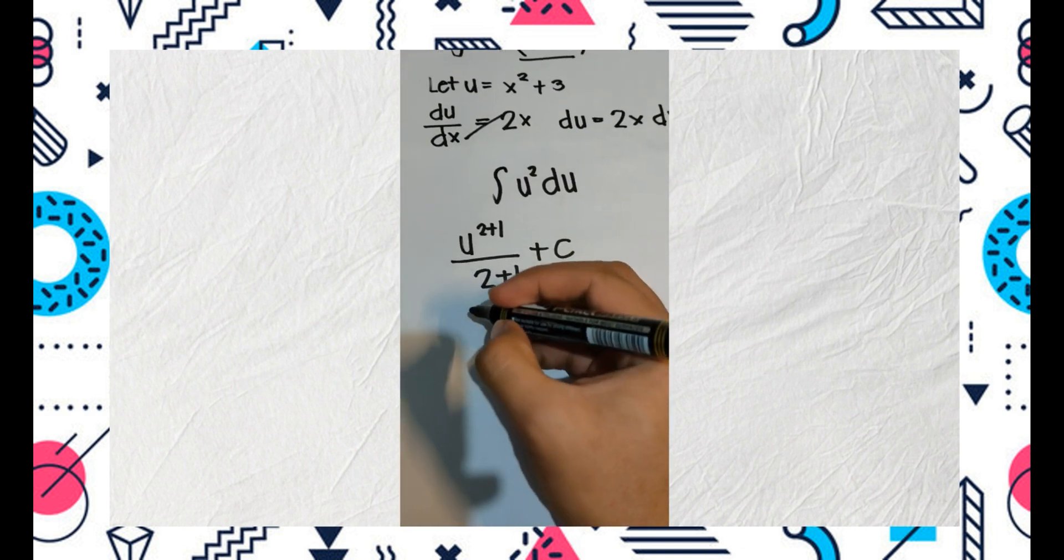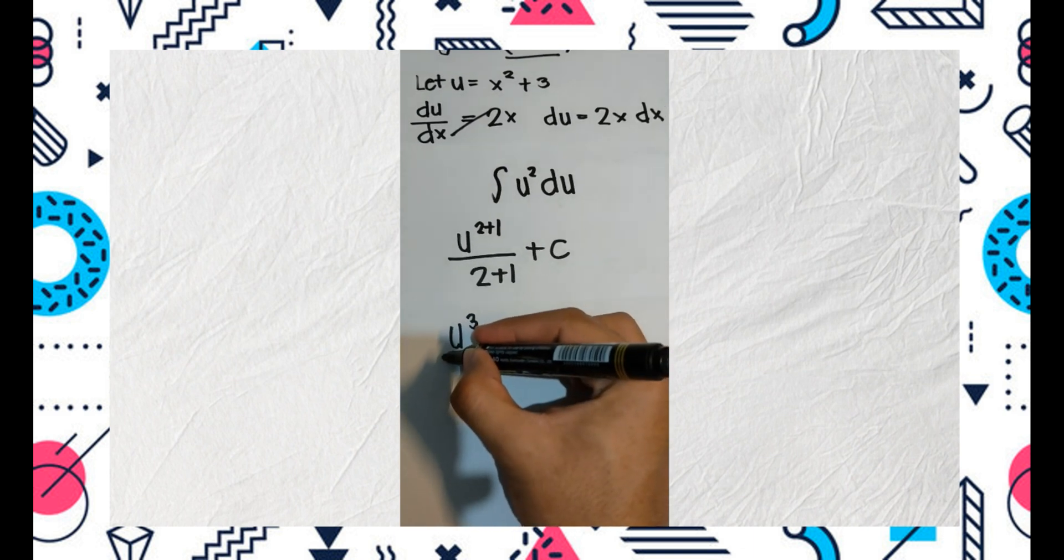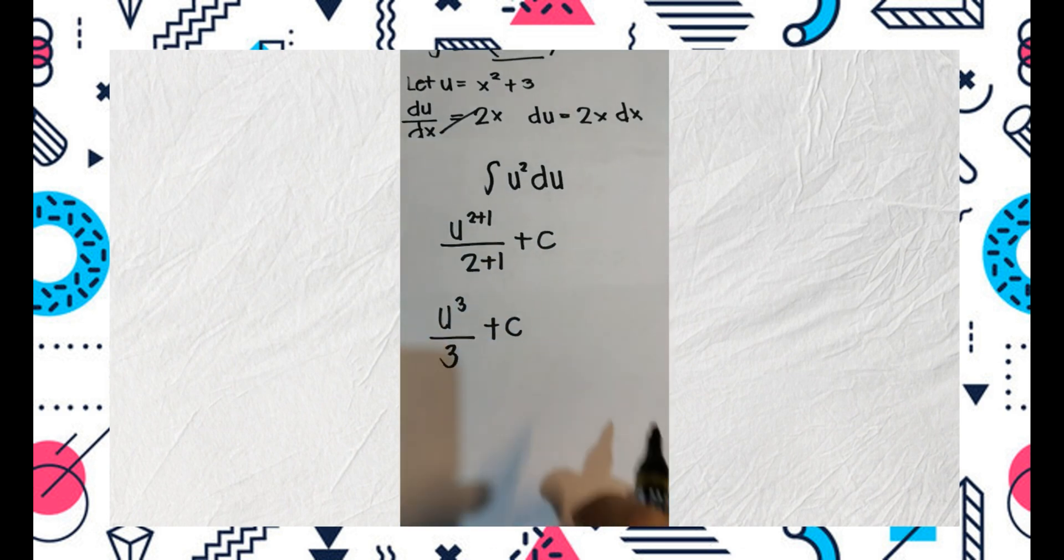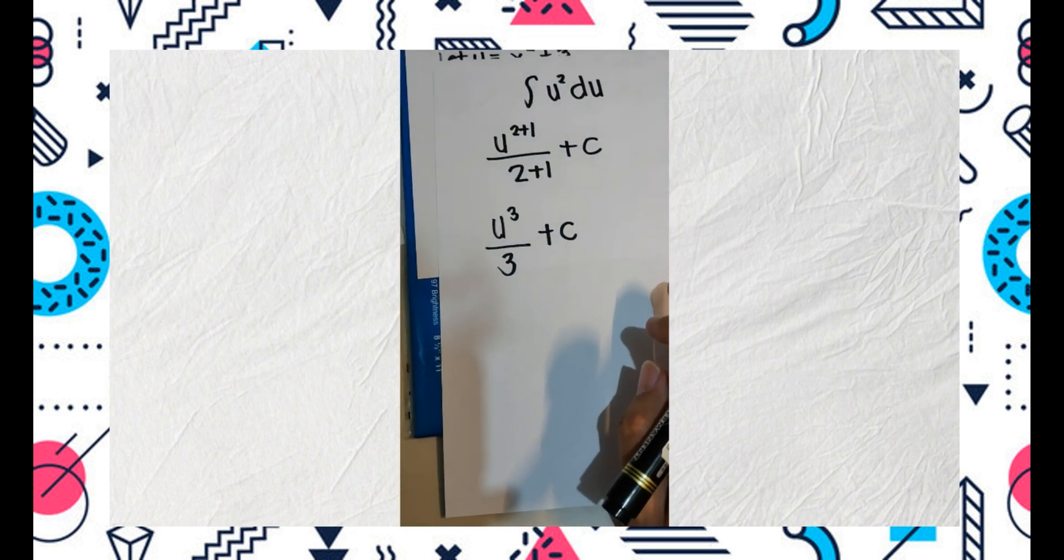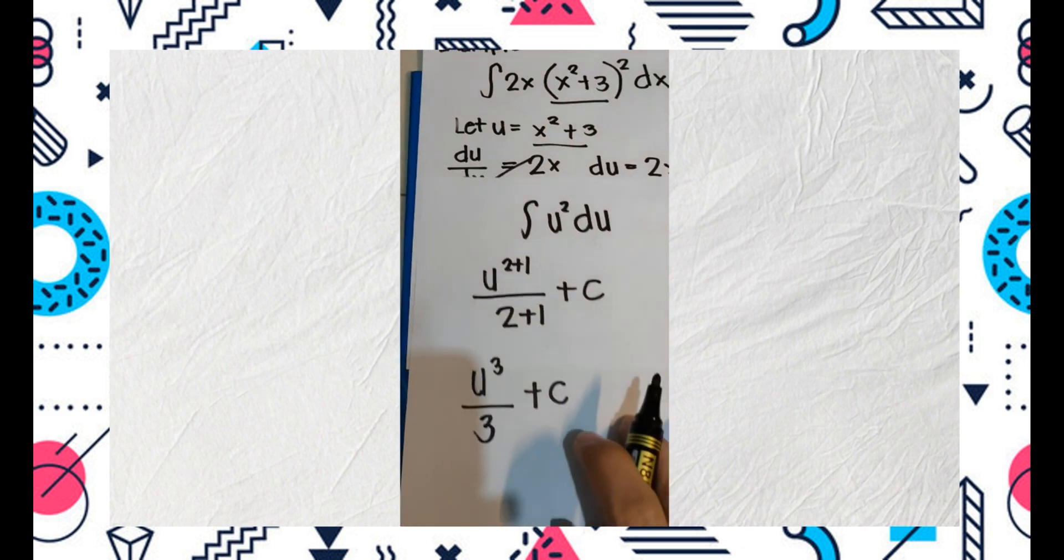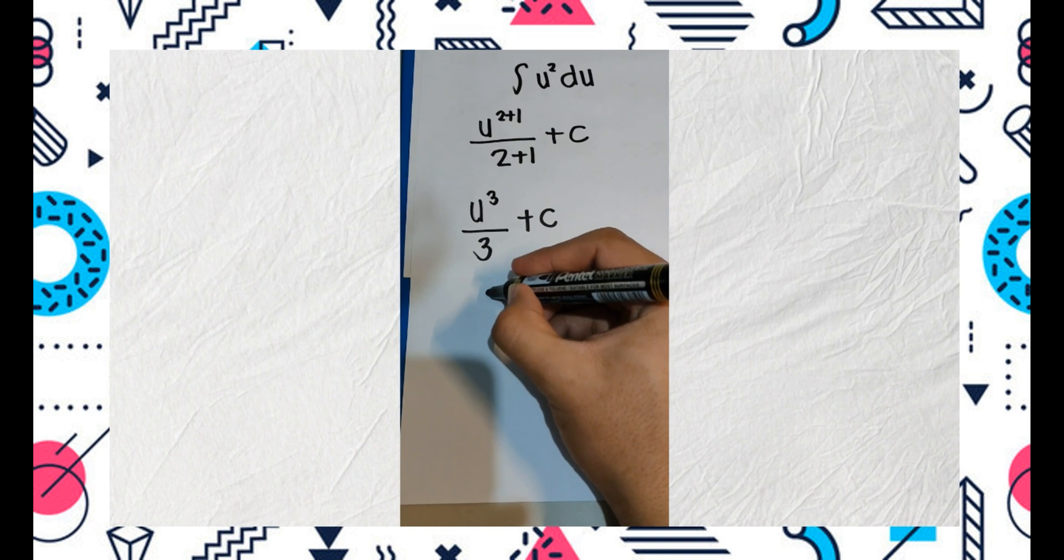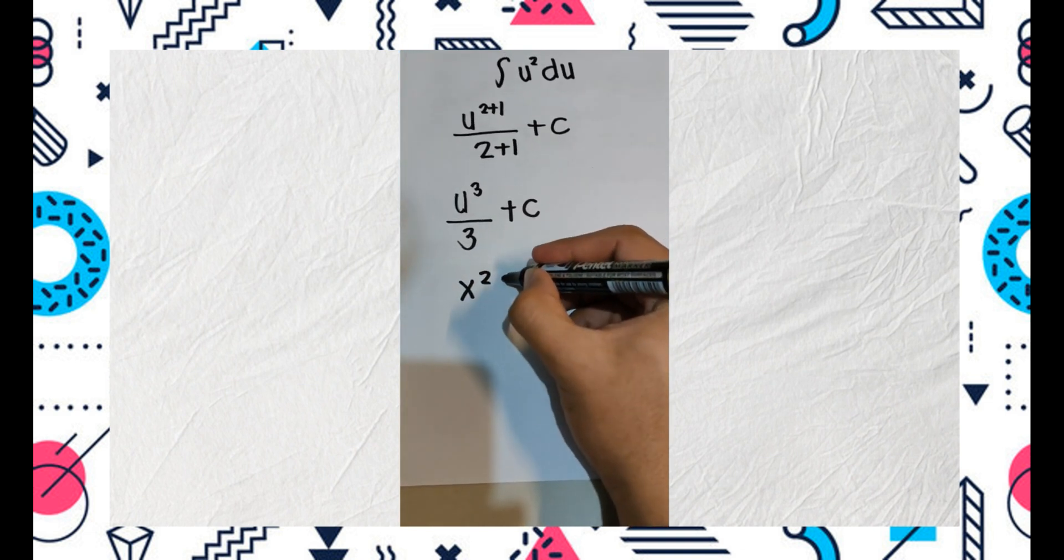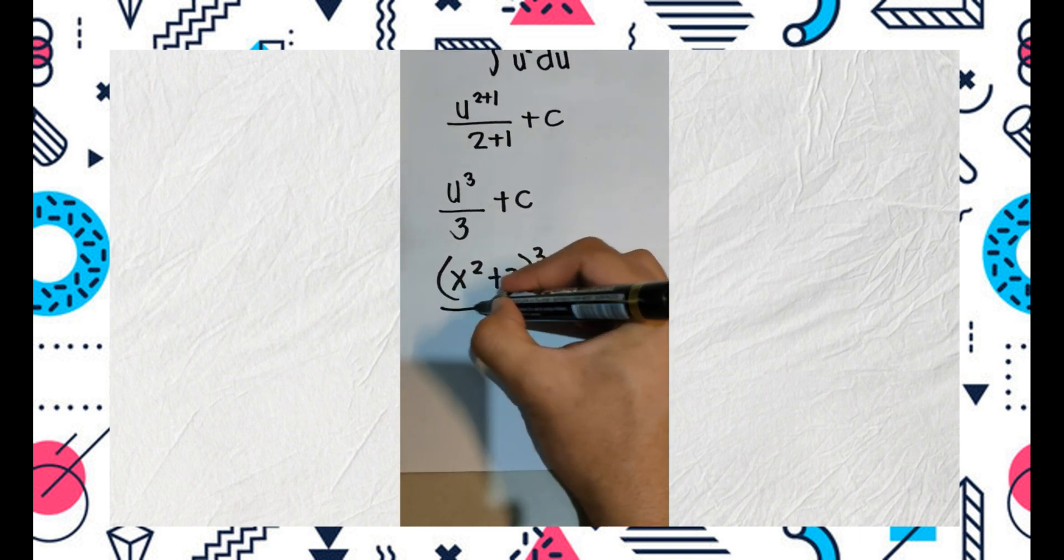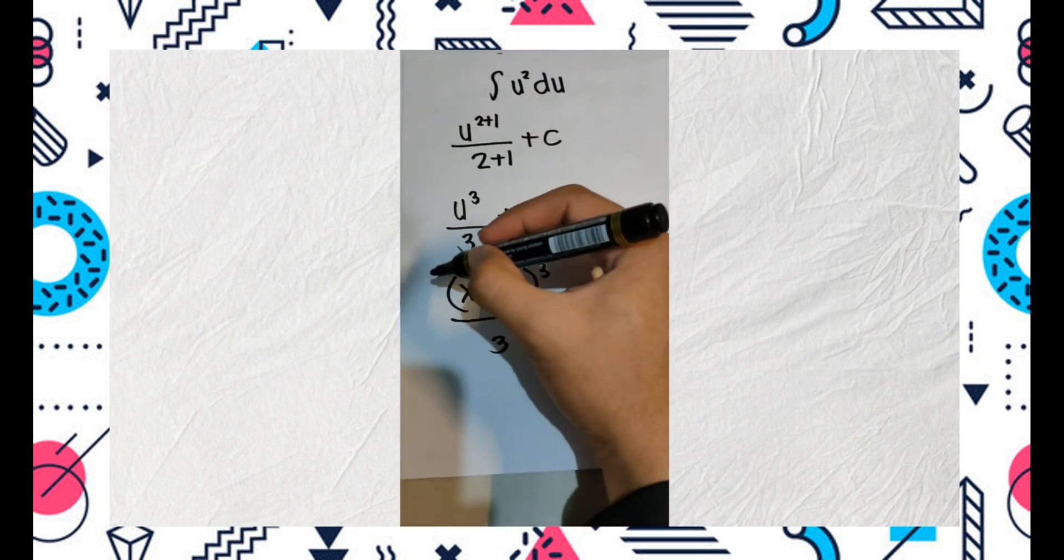So we compute u cubed over 3 plus c. Then substitute the value of u, which is x squared plus 3. So x squared plus 3 cubed over 3 plus c. That's the final answer.